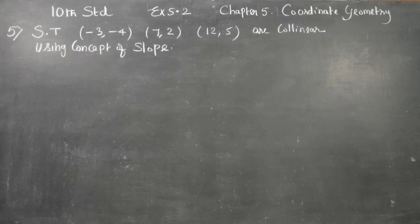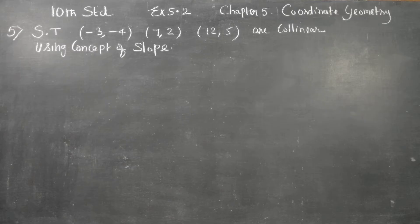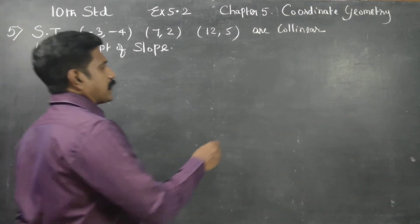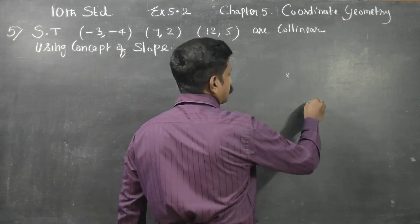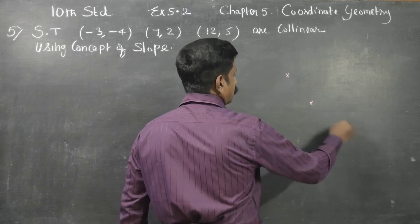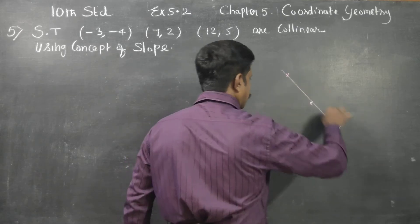Using the concept of slope, we can prove that the given three points are collinear. Collinear means the points lie on the same straight line. For example, with 3 points, if they are on the same straight line, the slopes will all be equal.